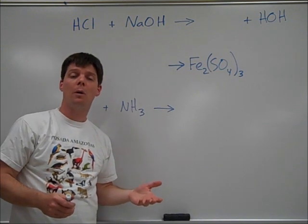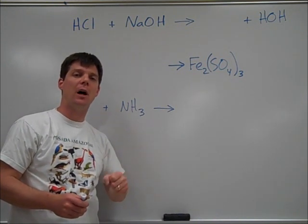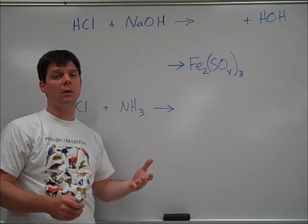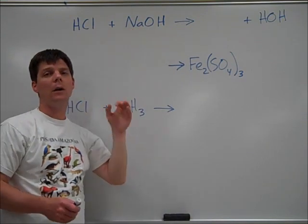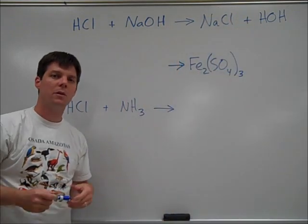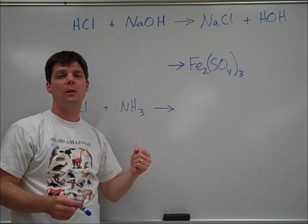Water's formula is HOH here to remind us that we are producing a hydrogen hydroxide compound. The other product of this reaction will be the result of the combination of the other two ions, the sodium plus one and the chloride minus one. So this acid-base reaction will produce sodium chloride and water.